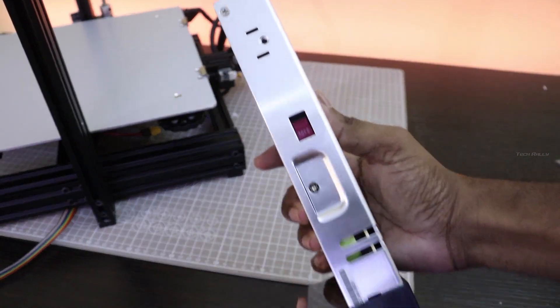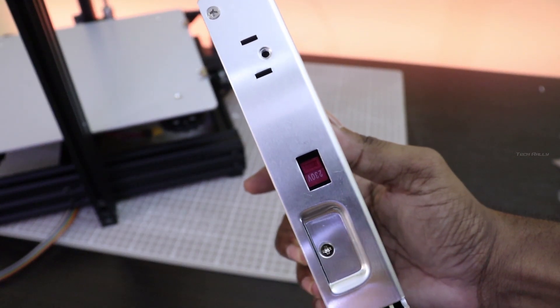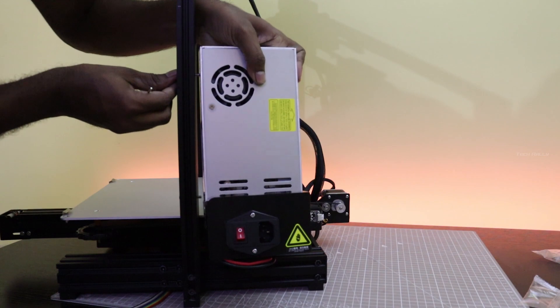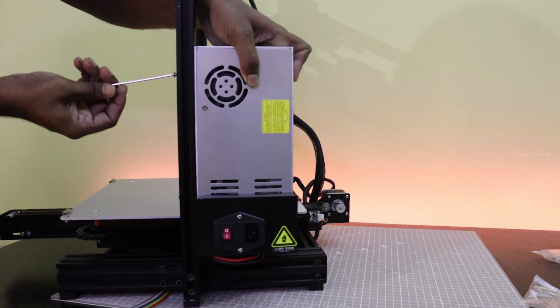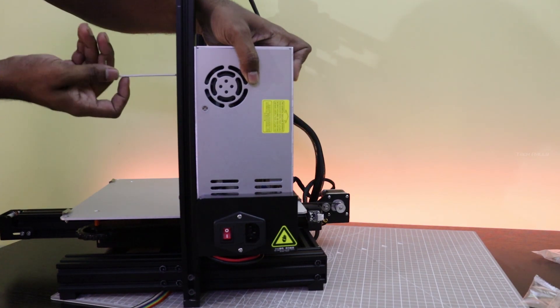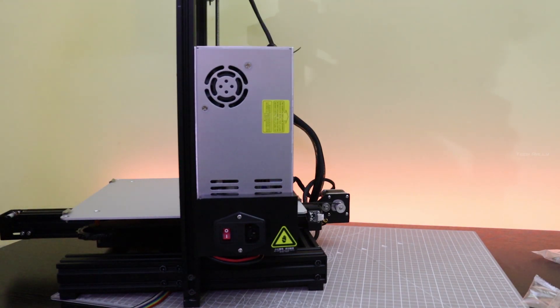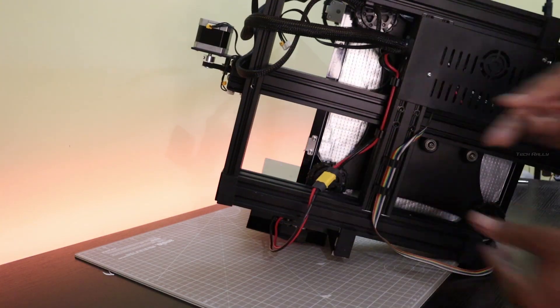Next I installed the power supply. Make sure the proper voltage is selected in the sliding switch. Then connect the power cables at the bottom of the printer.